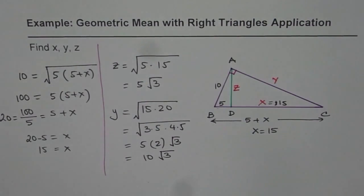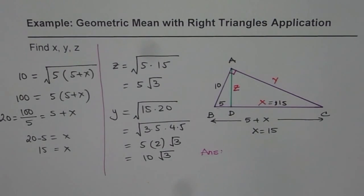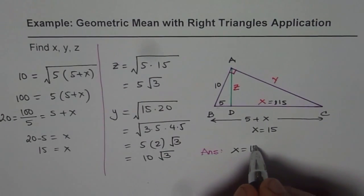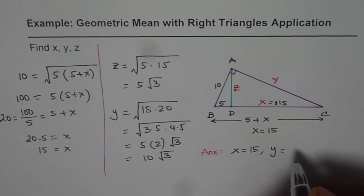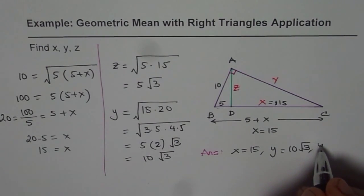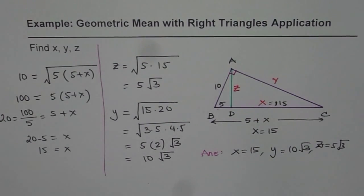So these are the values of x, y, and z respectively. So we can write down our answer here. Our answer is x equals 15, y equals 10 square root of 3, and z equals 5 square root of 3. So that is how we can solve it quickly using the theorem.